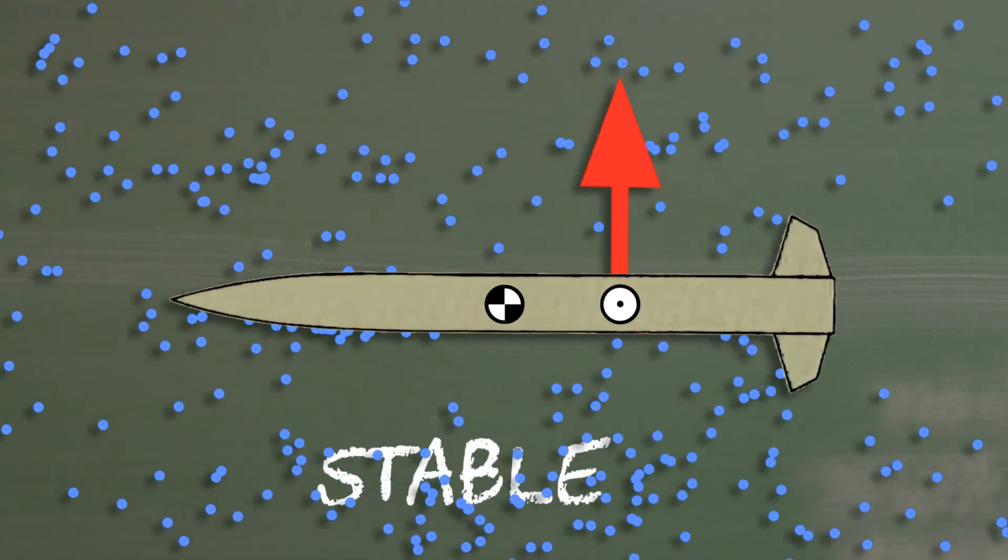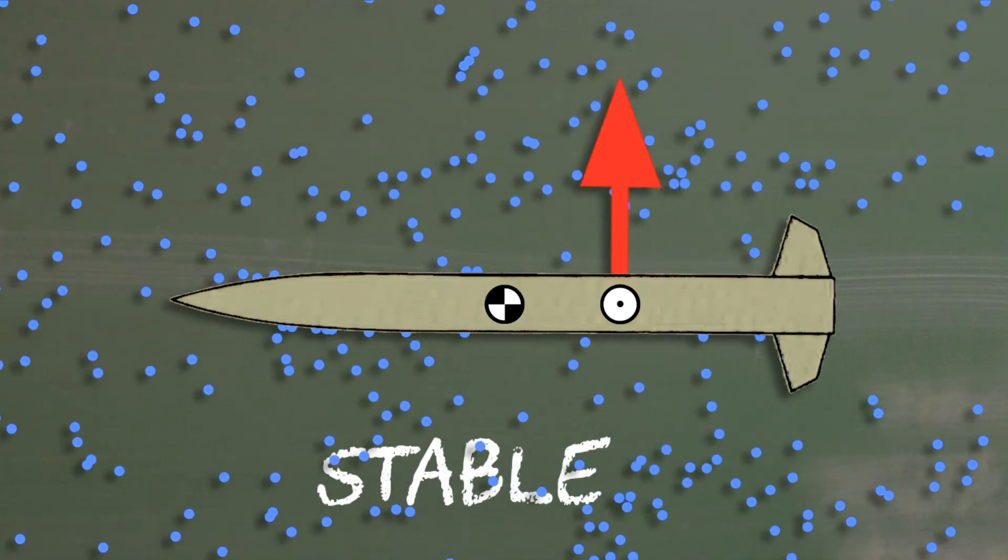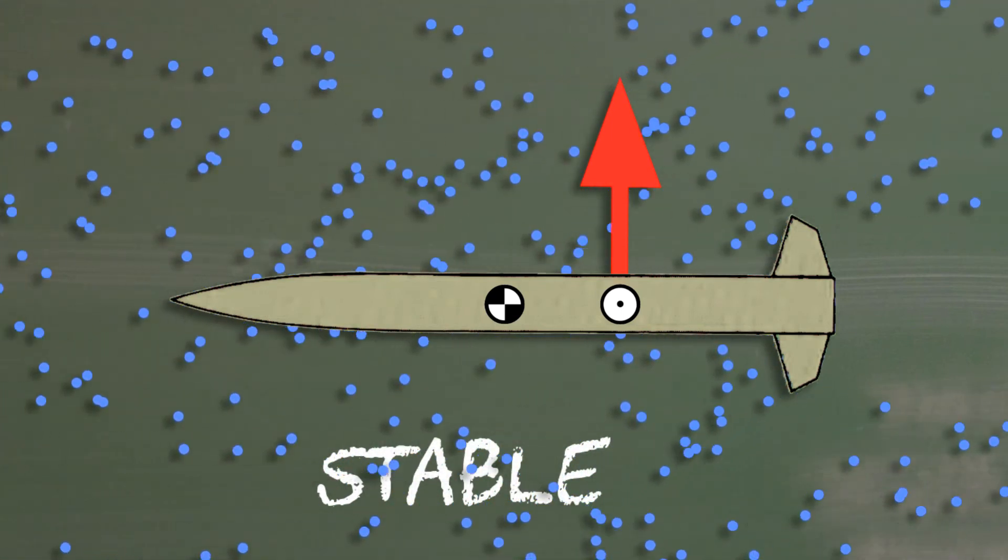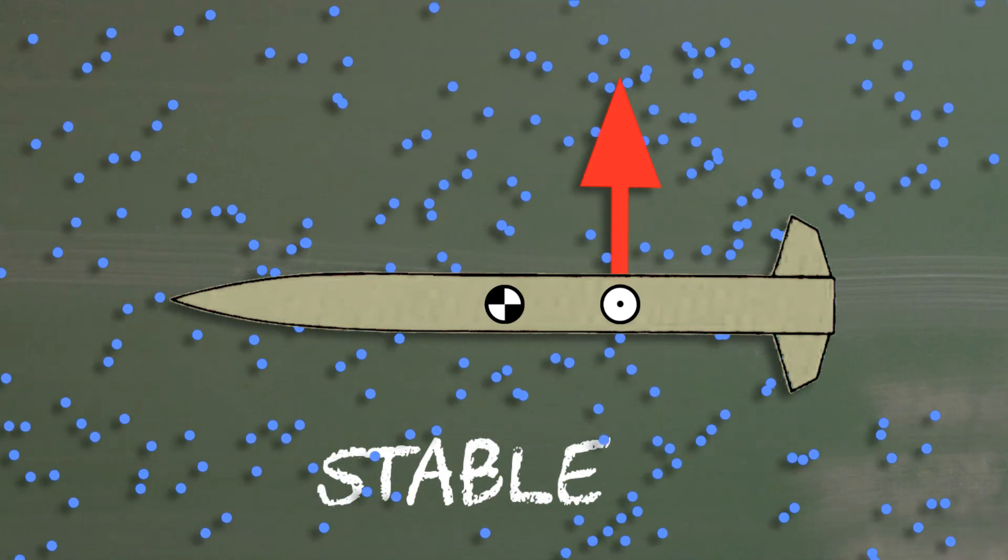We can see that the greater the distance is between the center of pressure and the center of mass, the longer lever arm the normal force has, and the rocket's tendency to rotate or moment will also be greater.